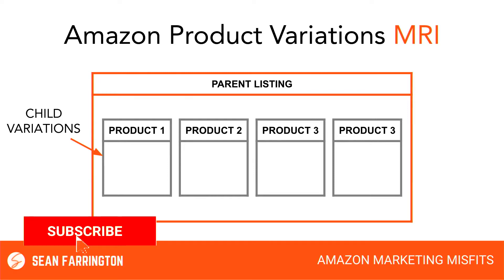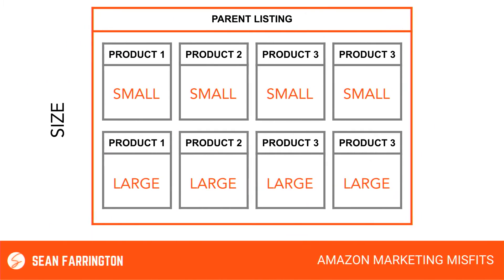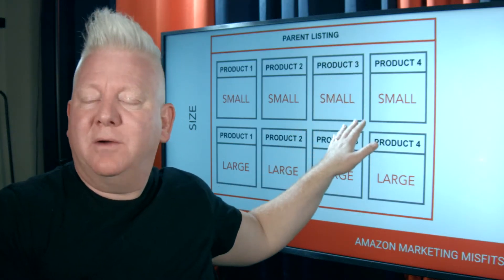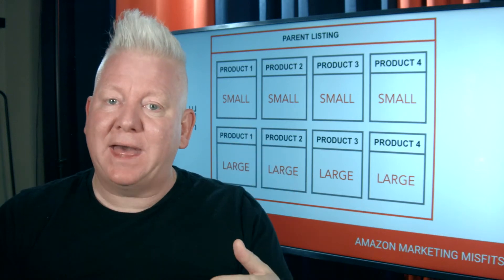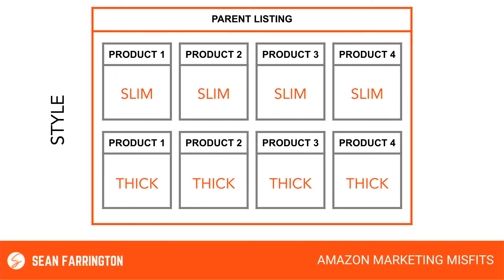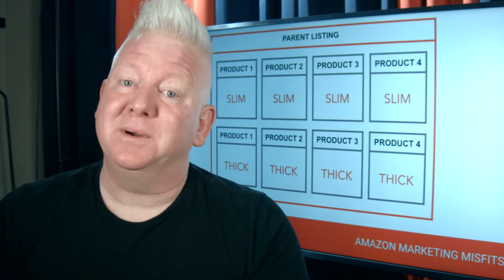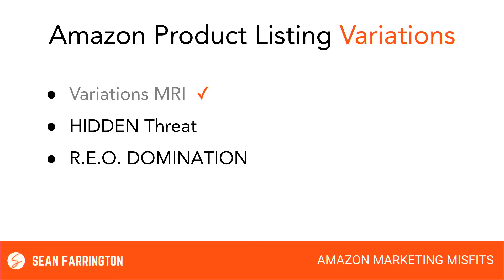This becomes critical to understanding the hidden threat, as well as the strategy to overcome it. Even though each individual product listing is housed in the parent listing, Amazon still looks at them as individuals. This only gets more complicated once you add other variations. You can have variations for a number of different reasons, such as size — product four needs two listings just to have the option of small or large. You can have variations for just about anything: color, style, size. That's the upside. Then we get into the hidden threat.